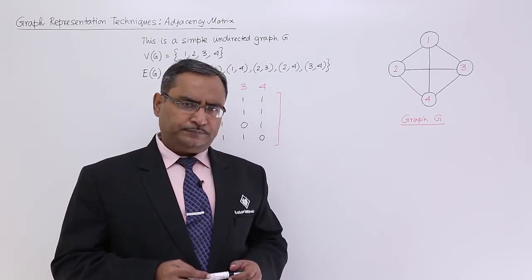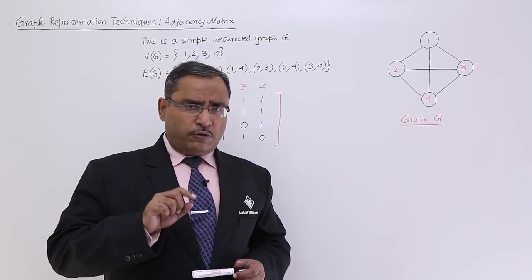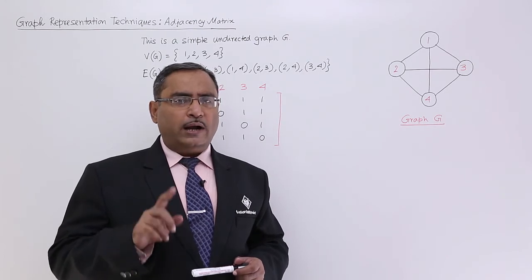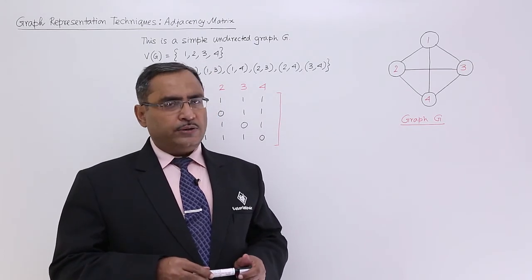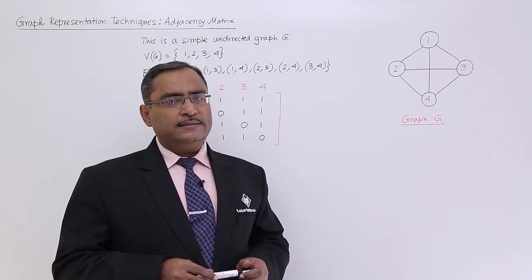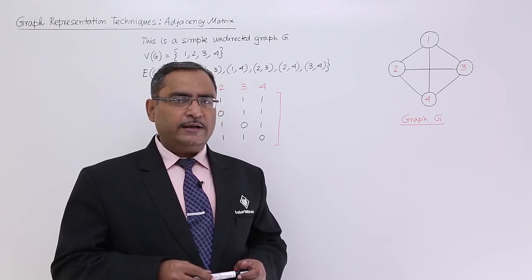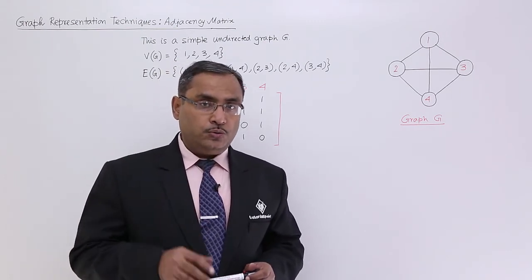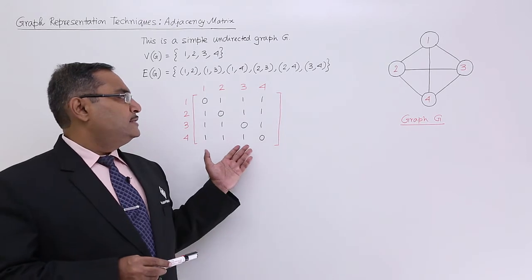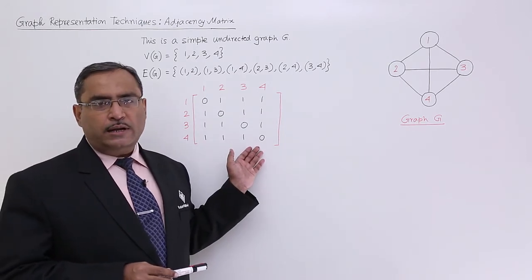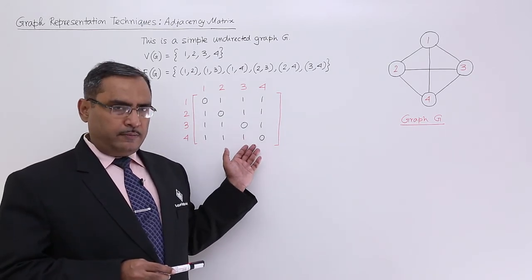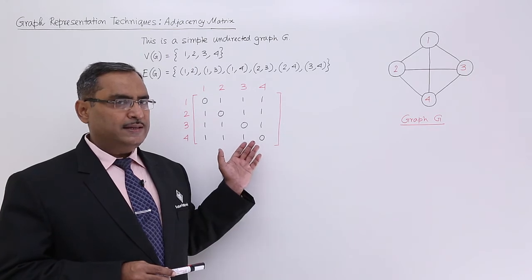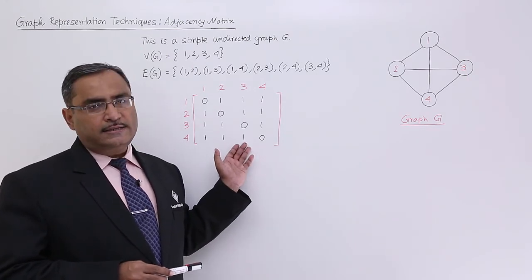but in case of directed graph, one edge from 1 to 2 means 1 is adjacent with 2. It does not indicate that 2 is adjacent with 1, if the arrow is directed from 1 to 2. So in those cases, the upper triangular and the lower triangular matrices will not remain same for this particular adjacency matrix.